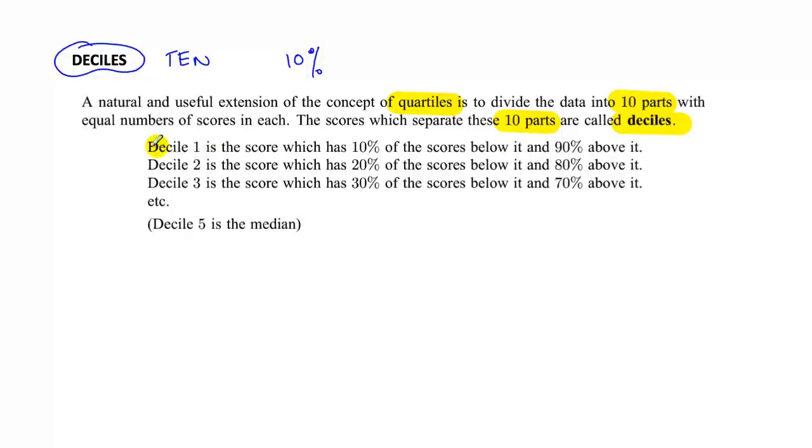So if you have decile 1, then what you say is that 10% of the scores are below it and 90% above it. If it's decile 2, 20% below, 80% above and so on.